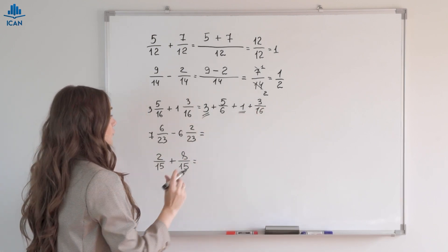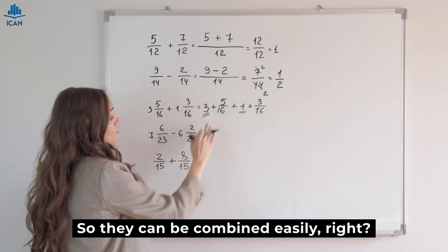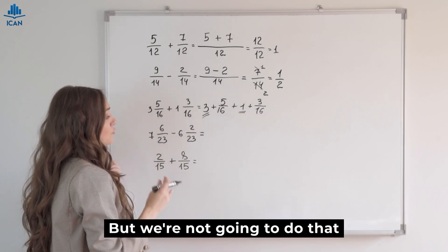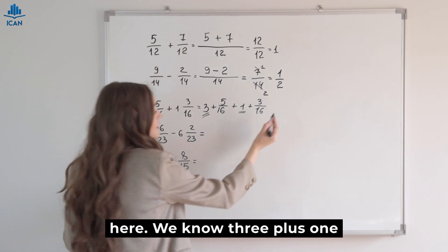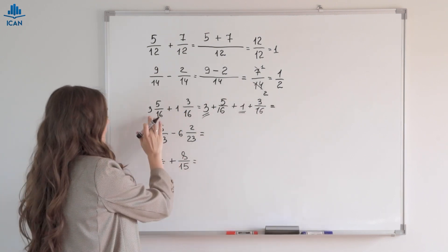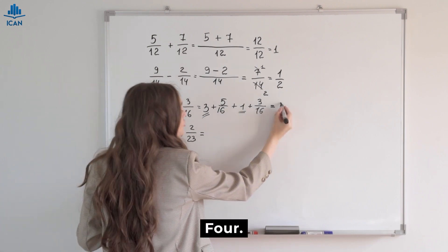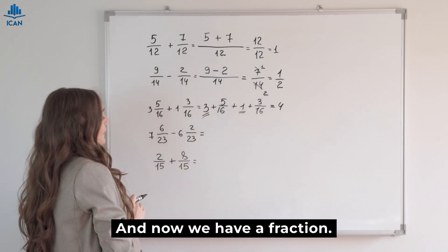We can add these together. Oh, 16 here. So they can be combined easily, right? But we're not going to do that here. We know 3 plus 1 equals what? 4.